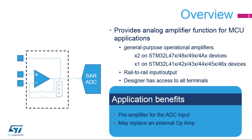Each operational amplifier inside STM32L4 products functions as a general-purpose analog amplifier, which may reduce the need for an external standalone op-amp. As these op-amps can be configured in standalone mode with all terminals available for the user, it is possible to use them as a voltage follower.